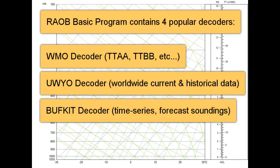Third is the BuffKit decoder, for soundings produced by the National Weather Service's Warning Decision Training Branch.